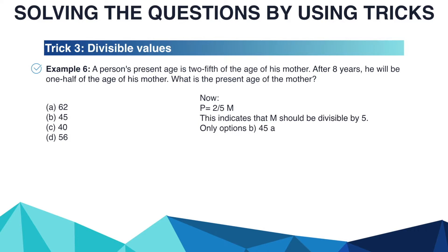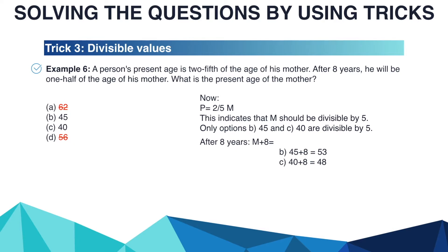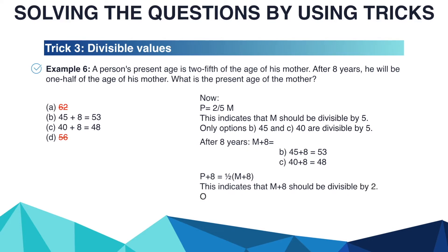Only options B (45) and C (40) are divisible by 5. After 8 years, the mother's age will be M plus 8: option B gives 45 + 8 = 53, option C gives 40 + 8 = 48. Since after 8 years the person's age is half the mother's age, M plus 8 must be divisible by 2. Option B (53) is not divisible by 2. Only option C gives 48, which is divisible by 2. Therefore the mother's age is C: 40 years.